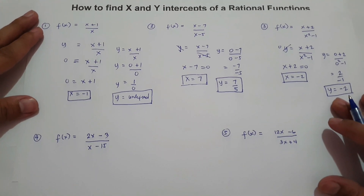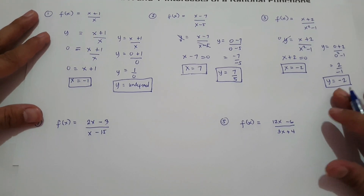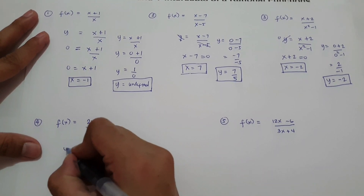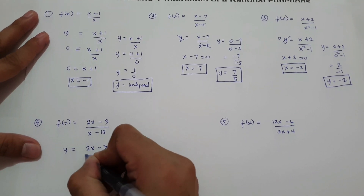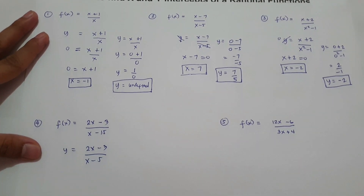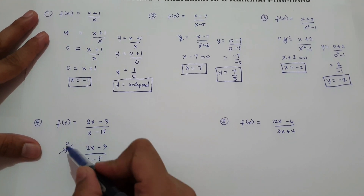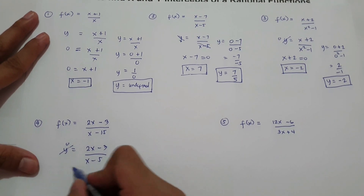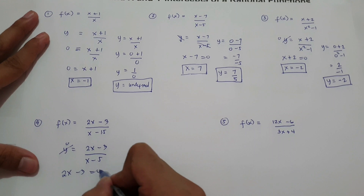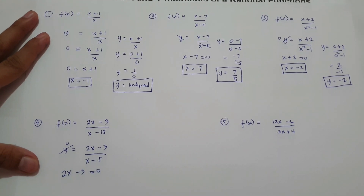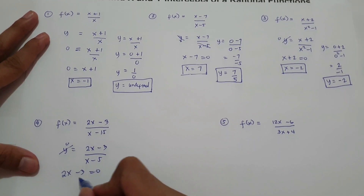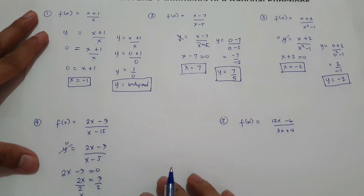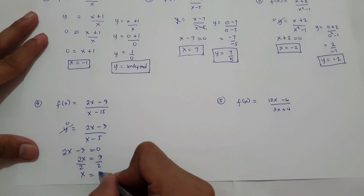What about number 4? Change f(x) in terms of y: y = (2x − 3) / (x − 5). To find x intercept, change y to 0 and equate the numerator to 0: 2x − 3 = 0. Move negative 3 to the side: 2x = 3. Divide by 2, so x equals 3 over 2. Our x intercept is 3 over 2.